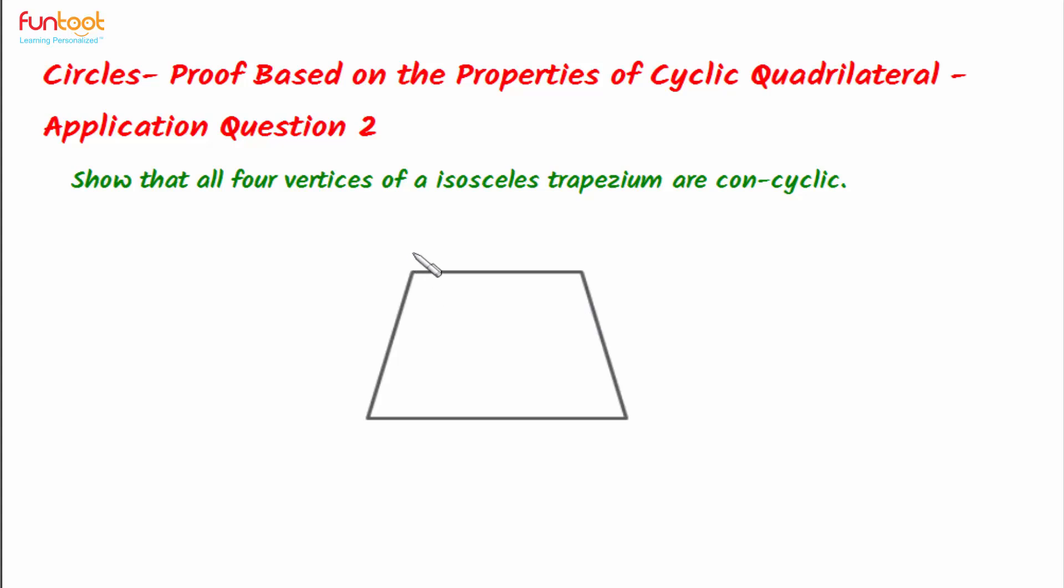So if we have an isosceles trapezium A, B, C, D. Isosceles means that non-parallel sides are equal. We have to show here that A, B, C, D is a cyclic quadrilateral. Also, AB is parallel to CD here.